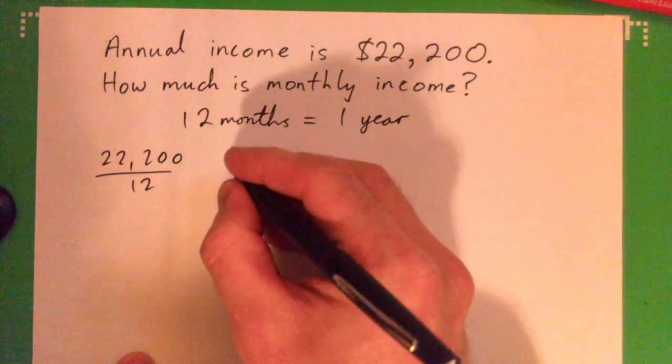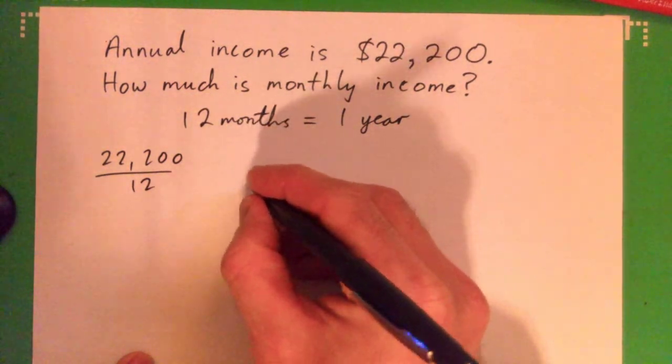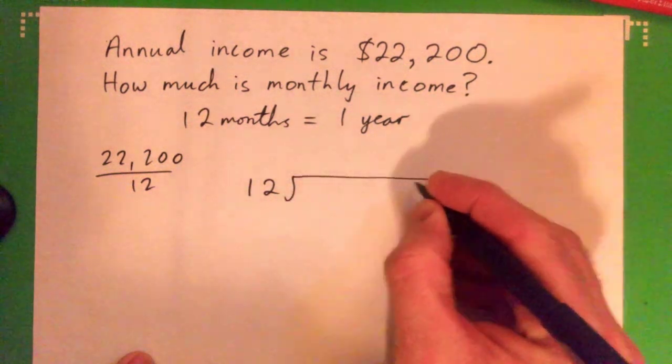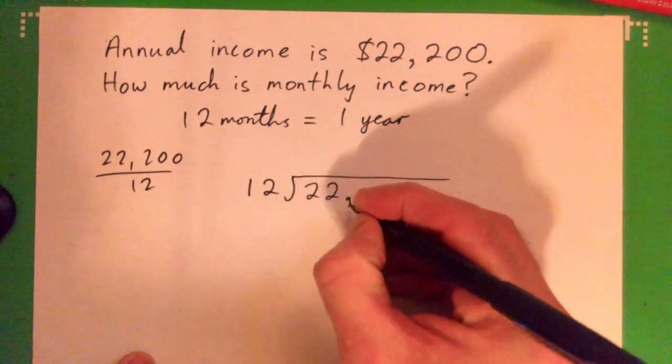That would look like this with long division: 12 into 22,200, right?